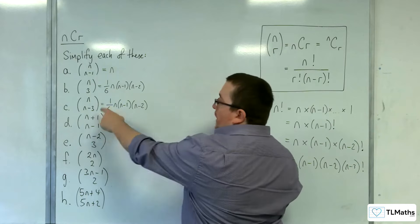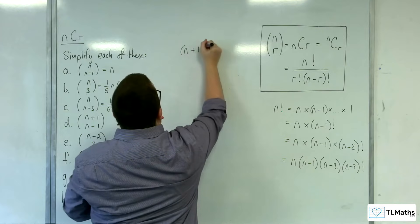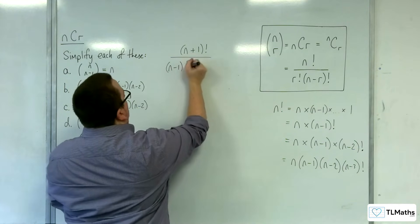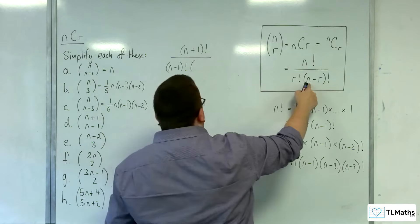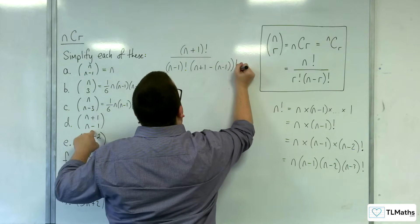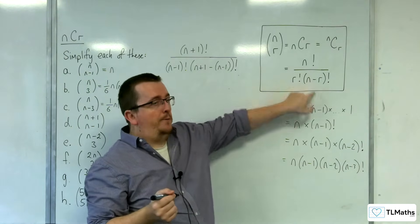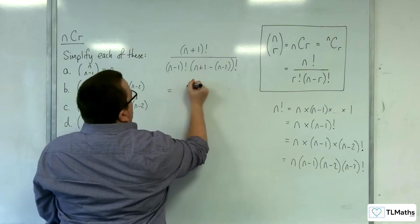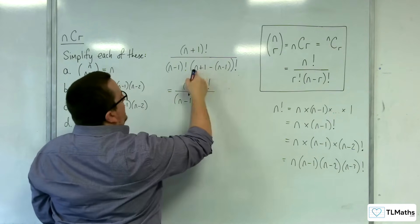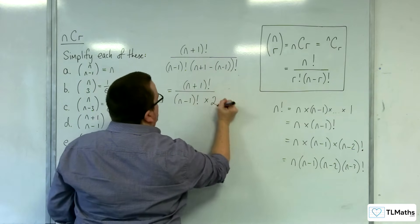Part D: N+1 choose N-1. The N is replaced with N+1 in the formula, and R is replaced with N-1. We also replace N in the N minus R term, so we get N+1 take away N-1. You have to be careful not to forget that you're replacing that N as well. So in the numerator we have N+1 factorial; in the denominator we have N-1 factorial, and then N+1 take away N-1 gives 2, so 2 factorial which is just 2.